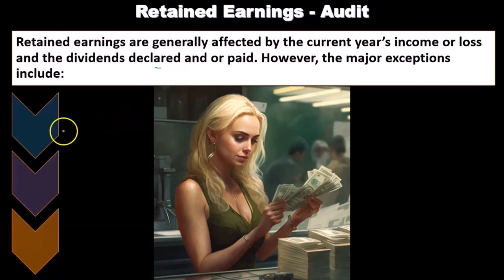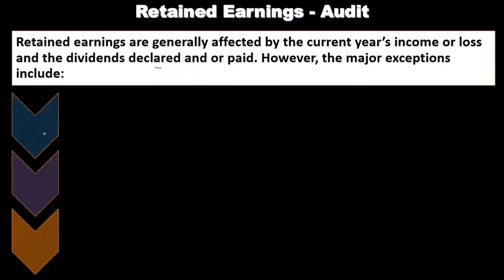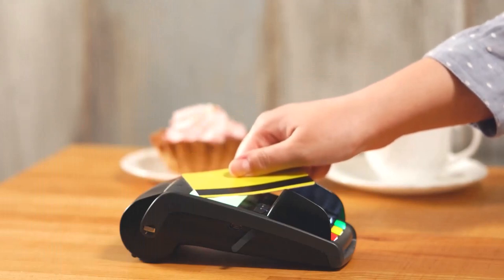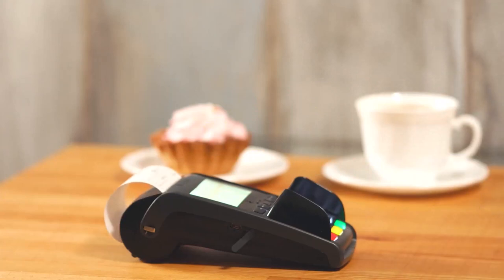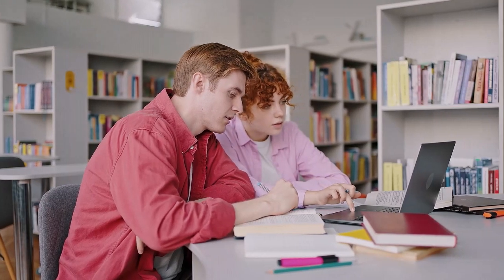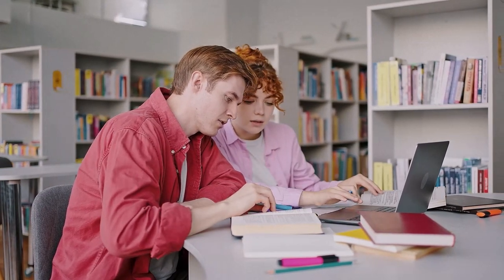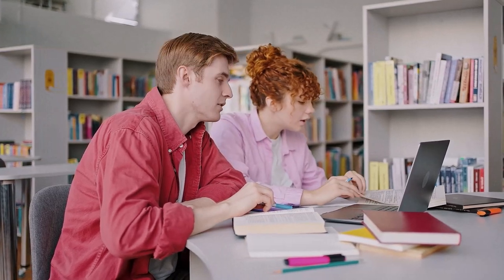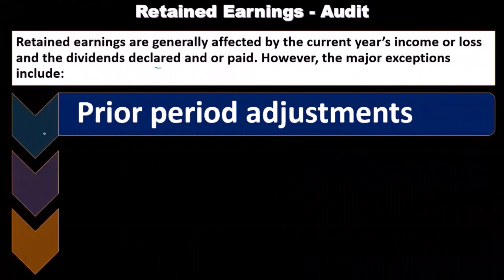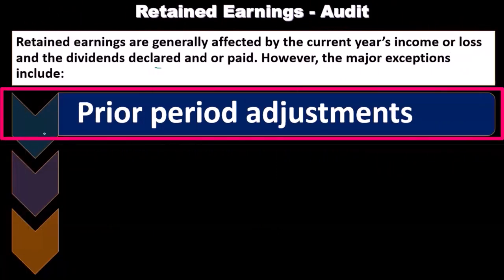As we audit things on the balance sheet and consider the processes, we typically do a lot of auditing on the income statement as well. With regards to retained earnings, the net income will roll in from the income statement. We're not going to spend a lot of time on that transaction separately — we'll audit it in terms of the income statement.